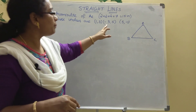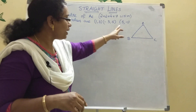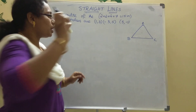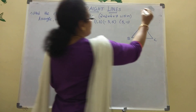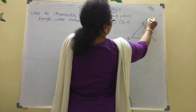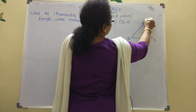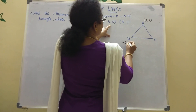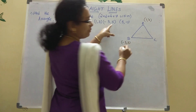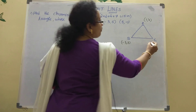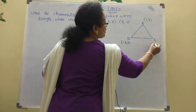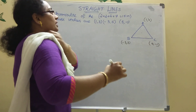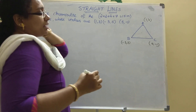The vertices given are A(1, 3), B(-3, 5), and C(5, -1). I am taking these as points A, B, and C of the triangle.